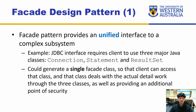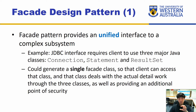An example is the JDBC interface, which requires clients to use three major Java classes: Connection, Statement, and ResultSet. Normally a user has to write functions and interact with each one individually to create a database connection. However, what you can do is create a single facade class so the client interacts with that class rather than directly with the others. This adds a point of security where the user is not directly manipulating individual classes but must always go through this single facade class. You need to make sure the facade class is secure, and then it can restrict users' access to manipulate other classes.